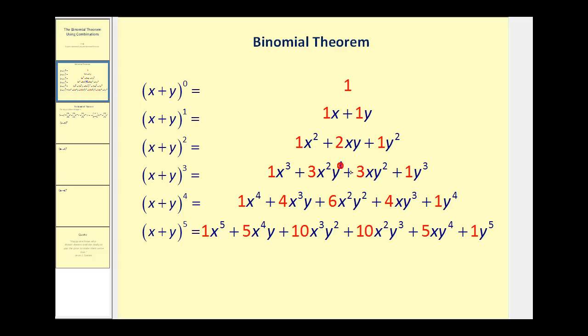This would be y to the first. Notice the sum of the exponents is still three. The third term, we have x to the first, so the factors of x have dropped by one again, and we've picked up another factor of y, all the way to y to the third.